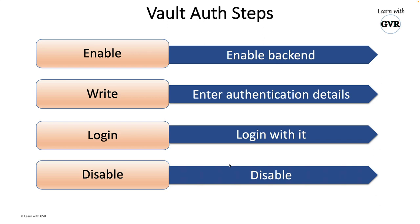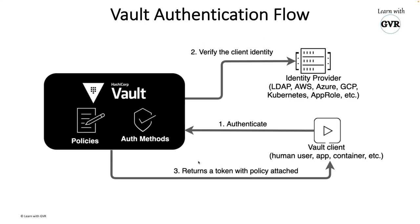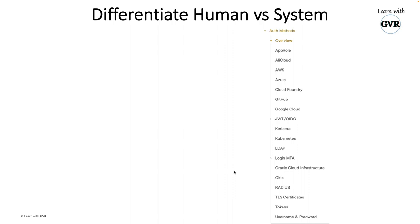Now let's look at the vault authentication flow. Any client that wants to authenticate connects to the vault system using an authentication mechanism. Based on internally defined policies, it goes to the actual system for verification. For example, if you use GitHub authentication and enter a GitHub token, that token gets verified at GitHub and vault will issue a token - that's how the basic authentication flow works.